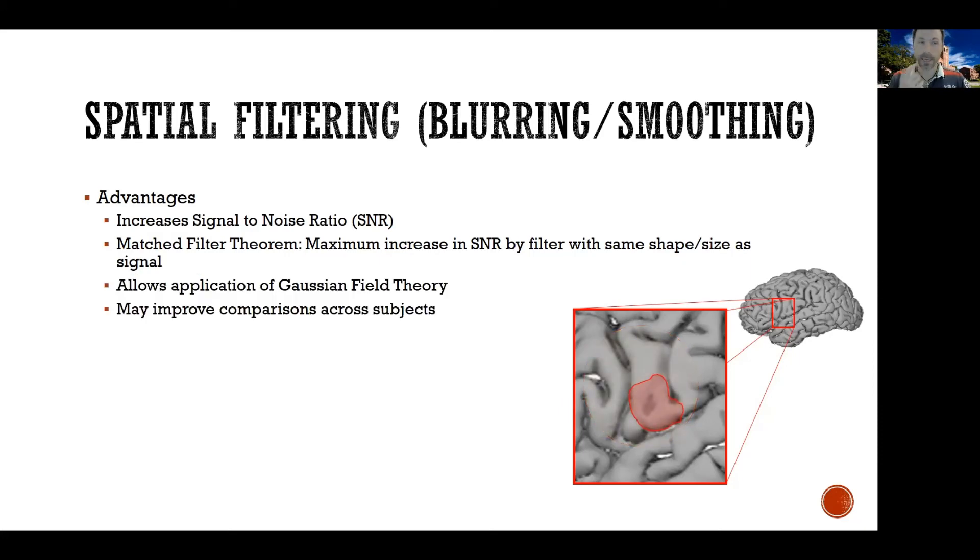Now other important aspects of this: the smoothing will allow us later on to employ a technique known as Gaussian field theory, and this is something we're going to see towards the end of this class. But at the very end, when you're trying to decide which voxels are statistically significant and which not, one of the ways to do that is to apply a technique known as Gaussian field theory. And this requires your data to have a certain smoothness. So applying a smoothing filter at this stage helps you ensure that the hypothesis is met so that you can use that tool if you decide to.